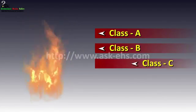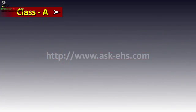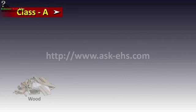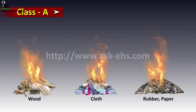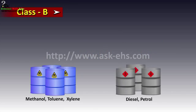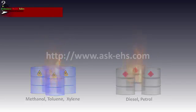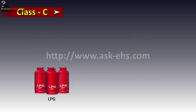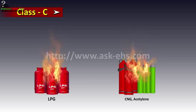Fire is categorized into four parts: Class A, Class B, Class C, and Class D. Class A is solid fire — fire due to wood, goods, rubber, and paper. Class B is fire due to flammable liquid. Class C is fire due to flammable gas, such as fire due to LPG.